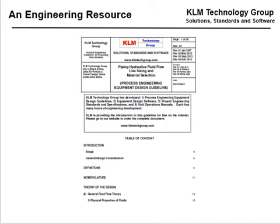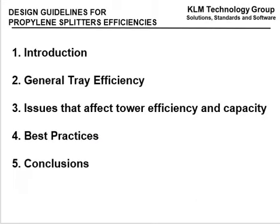People ask about the handbook — if you've searched anything on the web, you've found the Coleman's Handbook of Process Equipment Design. We're very pleased with the response we've got from all over the world. Today we're talking about Design Guidelines for Propylene Splitter Efficiencies. We'll cover an introduction, general tray efficiency, issues that affect tower efficiency and capacity, best practices, and some conclusions.